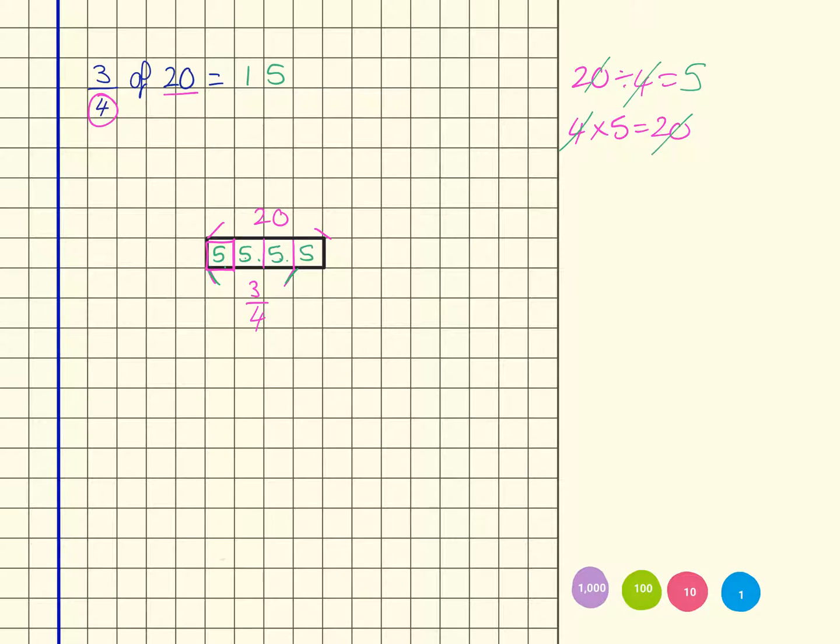So what I'm effectively doing here is I'm taking the whole number of 20 and I'm dividing it by the denominator, which gives me five. And then I'm taking my total and I'm multiplying it by the numerator, which gives me the 15 that I've just calculated.